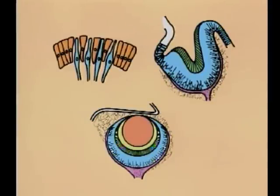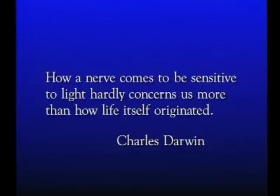So Darwin argued that there might be an evolutionary pathway from something like a simple light-sensitive spot all the way up to the complicated eye of vertebrates. His argument persuaded many of his contemporaries and really carried the day. But where did the light-sensitive spot come from? Darwin didn't know, and in the Origin he specifically declined to address that question. He wrote: 'How a nerve comes to be sensitive to light hardly concerns us more than how life itself originated.' Well, modern science has become interested in both of these questions.